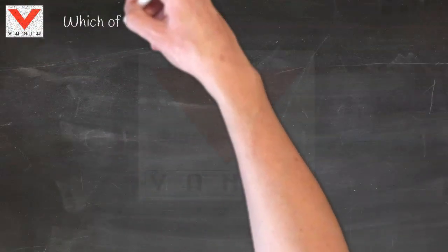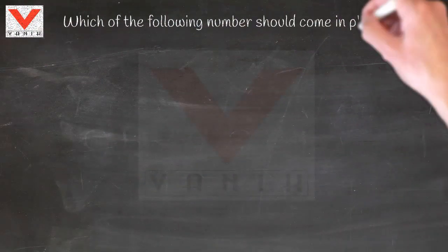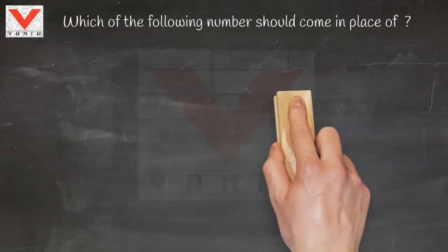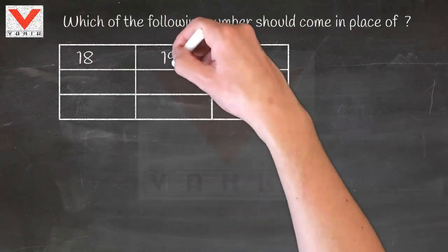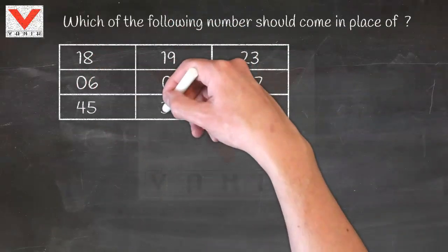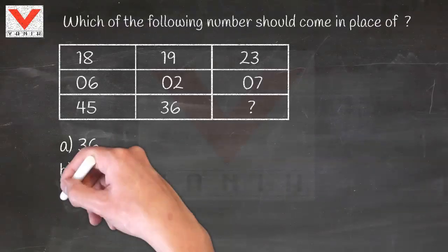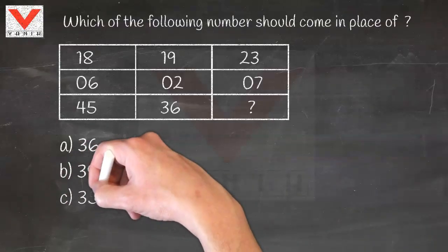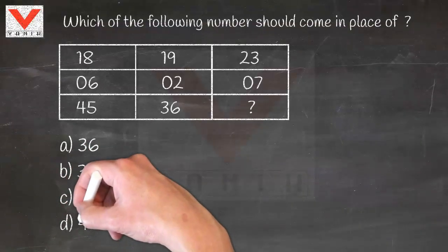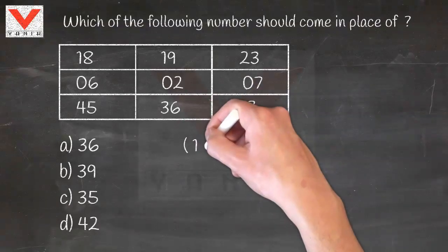Varnock reasoning tips. Which of the following numbers should come in place of the question mark? Options are: A) 36, B) 39, C) 35, D) 42.